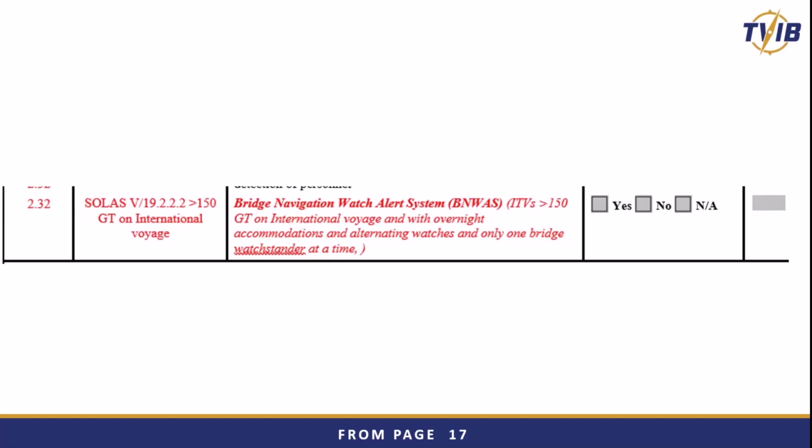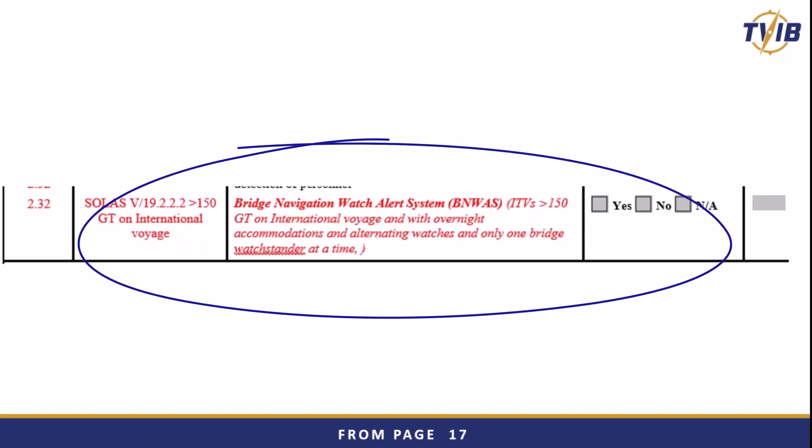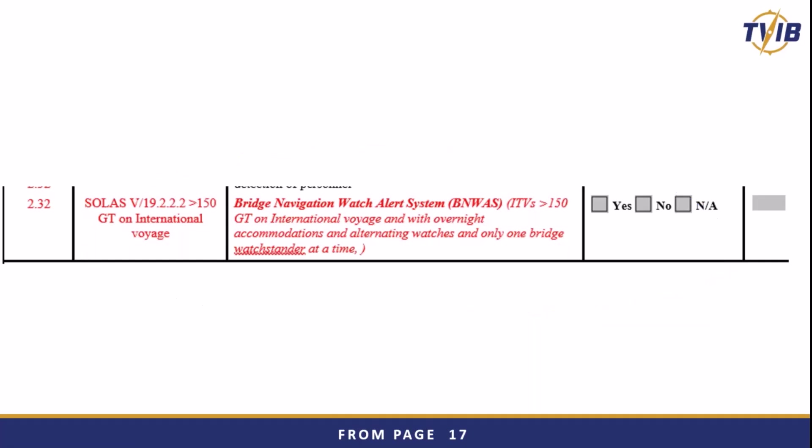Here we're talking about the pilot house alerter. It's contained under the items that have been deferred until the COI renewal or within five years of the initial COI issuance. The pilot house alerter system — for vessels greater than 150 gross tons on international voyages — requires a Benoit system. The testing requirements are still contained in the same area, but we wanted to identify that and the requirements.